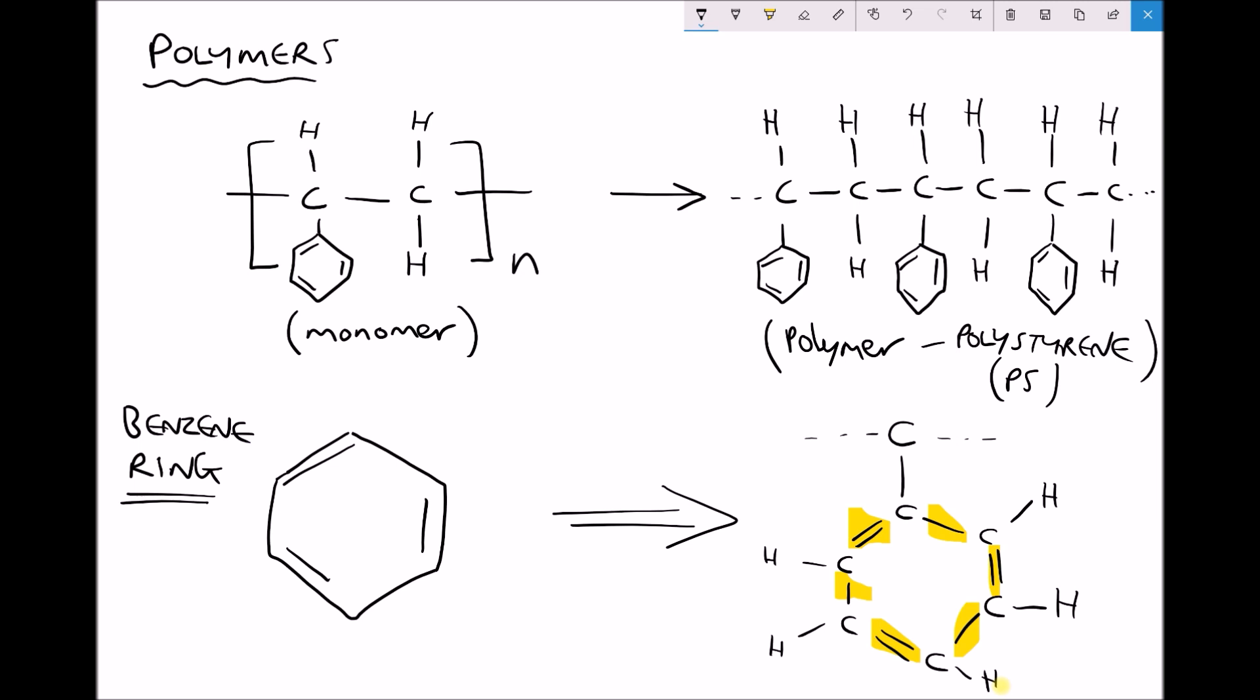Therefore the formula for this benzene ring we have six carbons C6 and we have five hydrogens so C6H5. So now let's relate that back to the formula for our monomer. Well in total we can see here that we have six carbons in our benzene ring and two on the backbone giving us C8, and we have five hydrogens in the benzene ring plus an additional three attached to the carbons of the backbone giving us H8. So C8H8 is the formula for the monomer.